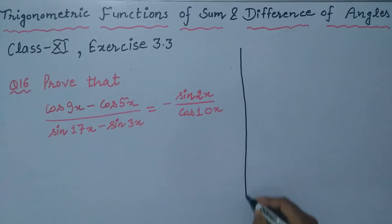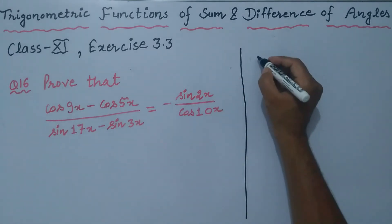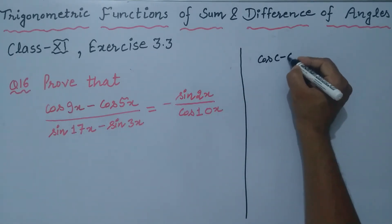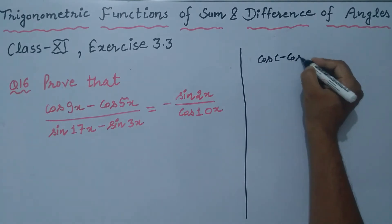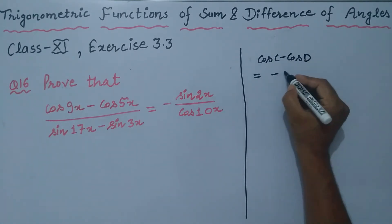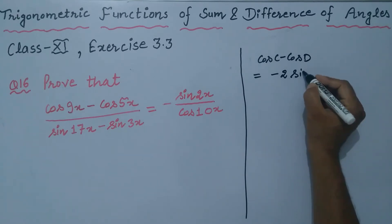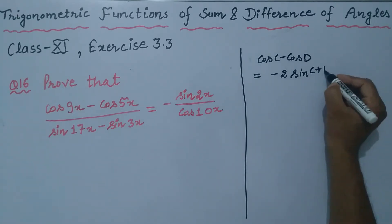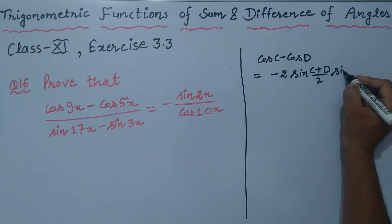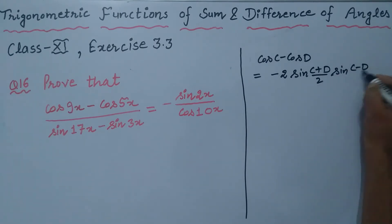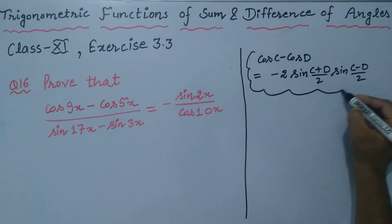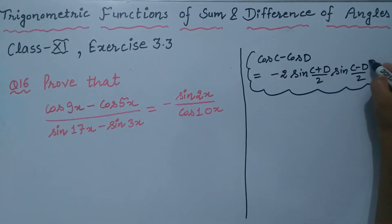First of all, the rule to be followed: we know that cos C minus cos D is equal to minus 2 sin of (C plus D)/2 into sin of (C minus D)/2. This is the first rule we shall apply in the numerator.